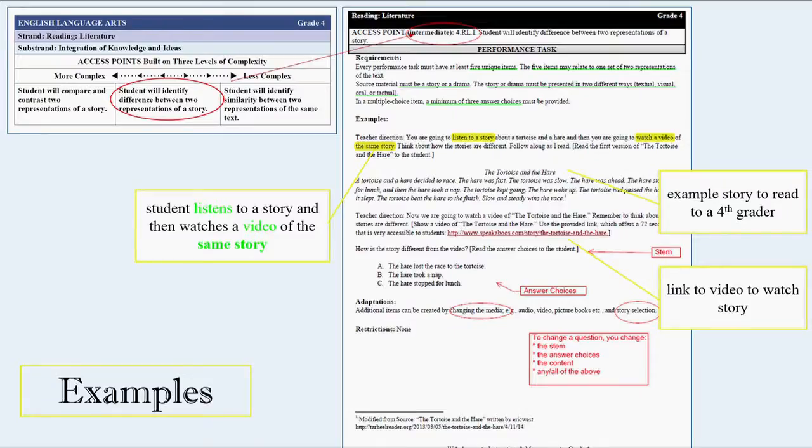This one happens to be the tortoise and the hare. It's great. There's a rabbit, there's a lesson to be learned. The teacher directions are here. In my example, you're going to listen to a story about a tortoise and a hare and then you're going to watch a video of the same story. If you're interested here, we also embedded. Here is tortoise and the hare from Tar Heel Reader, which is where we pulled this from. I'm imagining most of our students are not going to listen to even a six-line story.